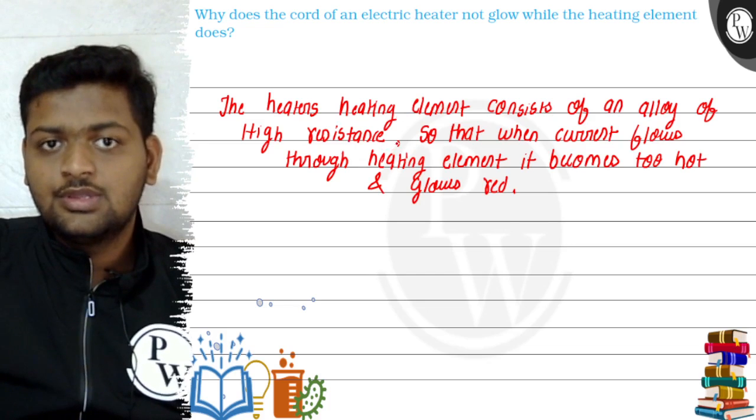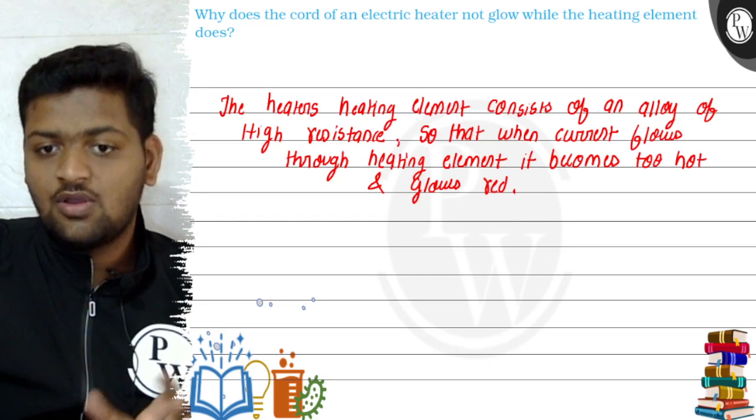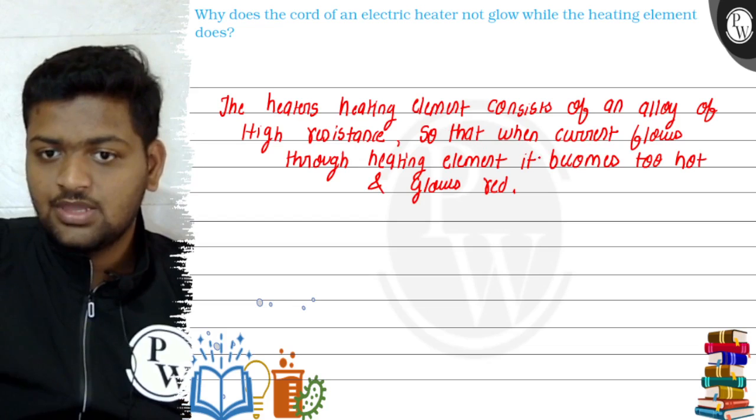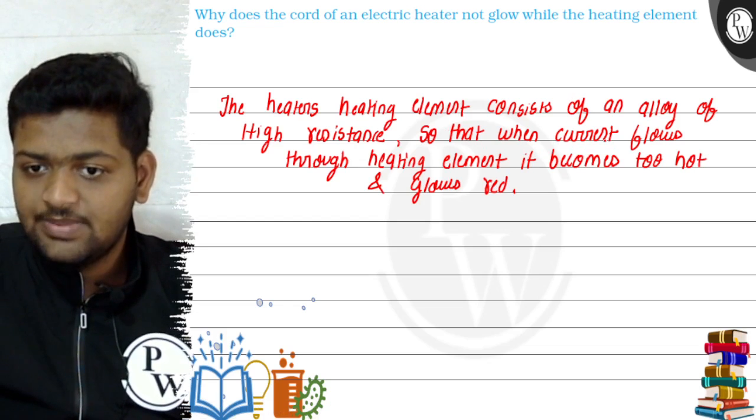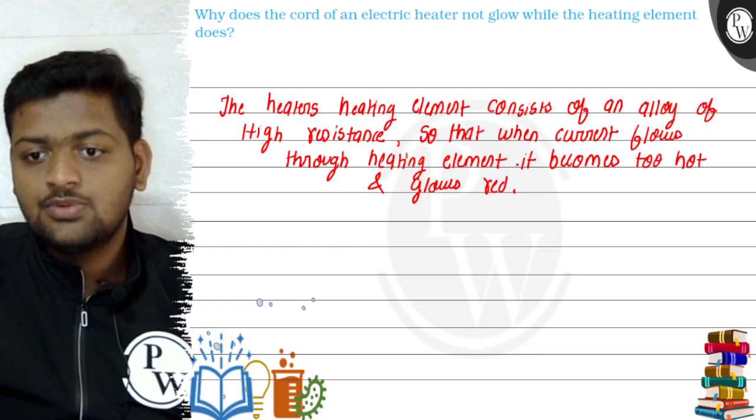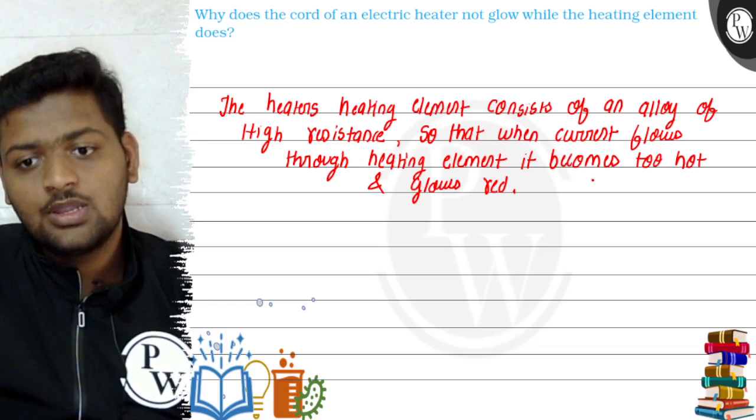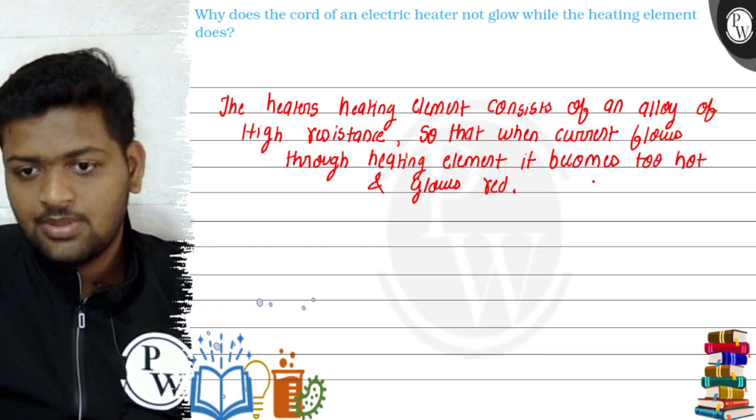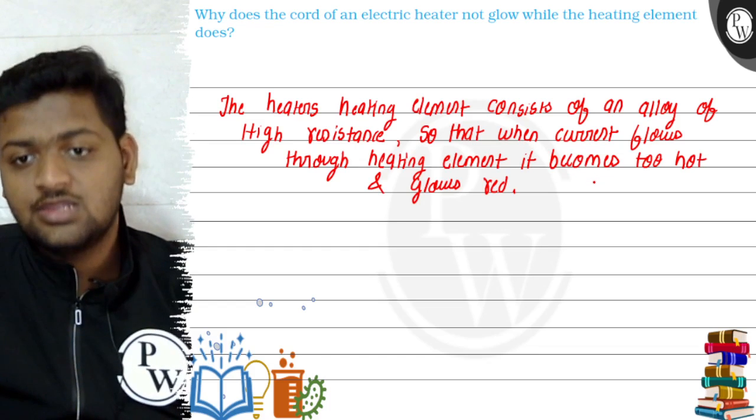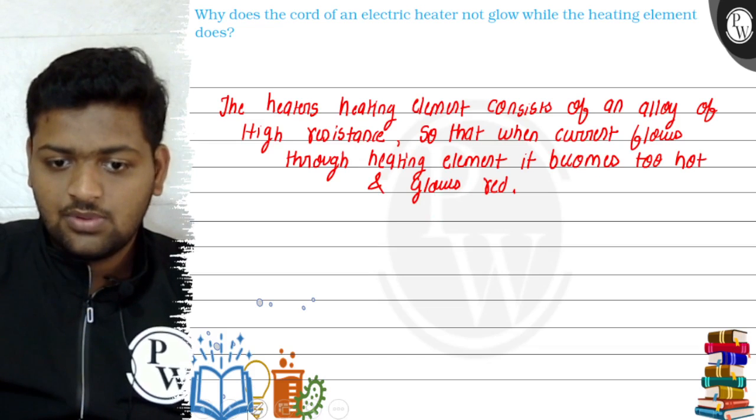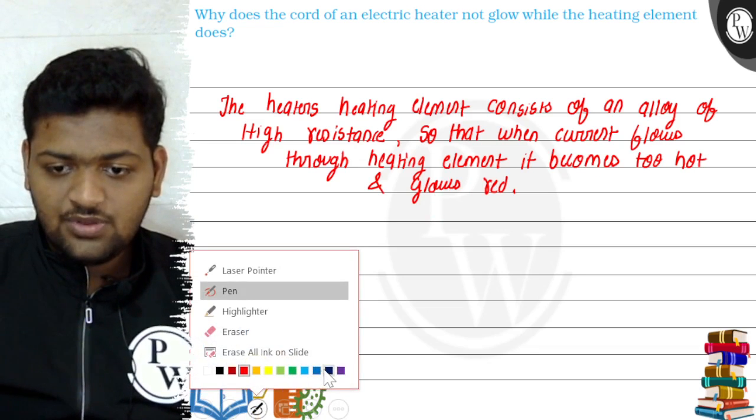Due to higher resistance, it leads to more heating of that element. When current flows through the heating element, it becomes too hot and glows red. Why is that heating important? So that the water gets heated inside the electric heater. Now let's talk about the cord.